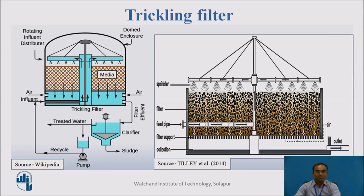Let's see the raw view of a trickling filter. You can see a trickling filter where wastewater is sprinkled on the surface area of the media, passes down, and is collected from the bottom. This is the feed pipe from which the water is taken up for the sprinkling system.